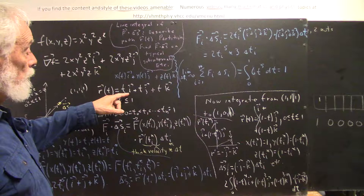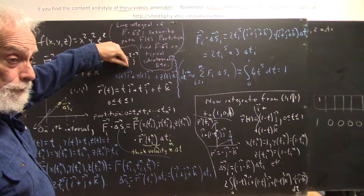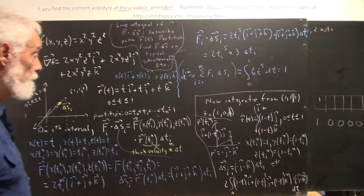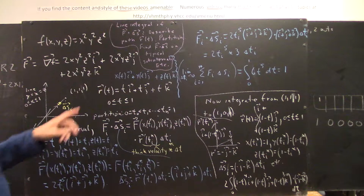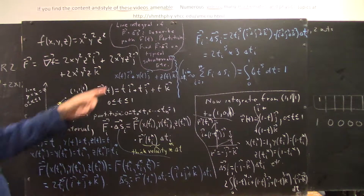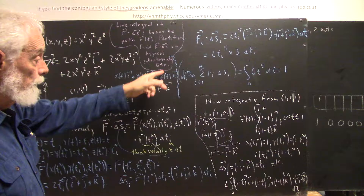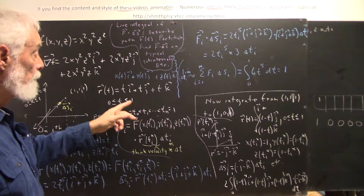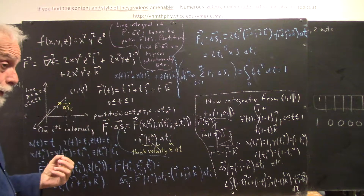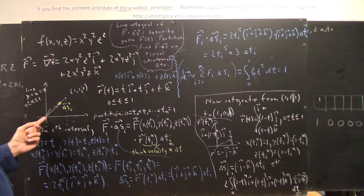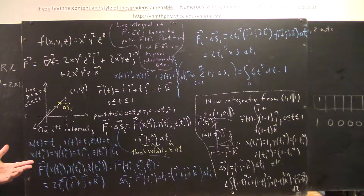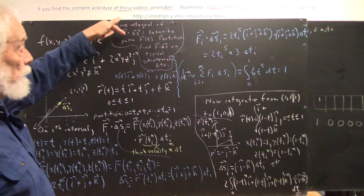Another way of looking at the line from (0,0,0) to (1,1,1): it's a line y = x = z, for 0 ≤ x ≤ 1. If we replace x by t, then we get y = t = z = x. The coefficient of i is a function x(t), the coefficient of j is a function y(t), and the coefficient of k is a function z(t). In this case, x(t) = t, y(t) = t, z(t) = t, and t goes from 0 to 1.